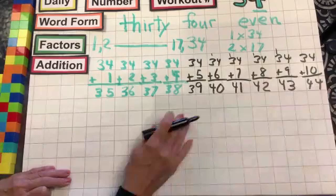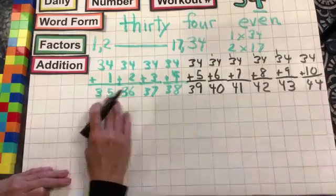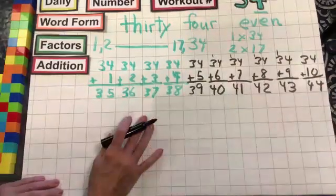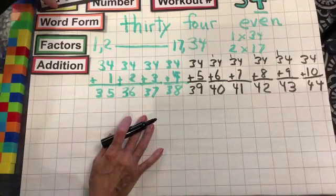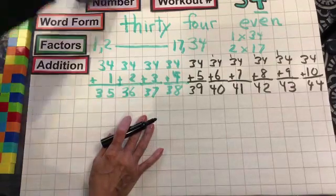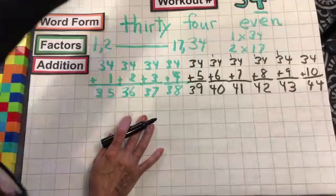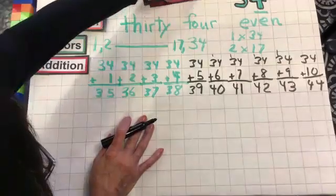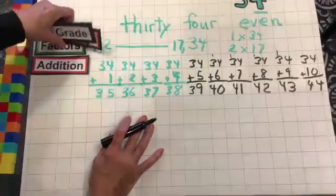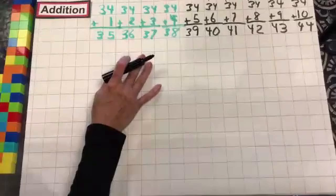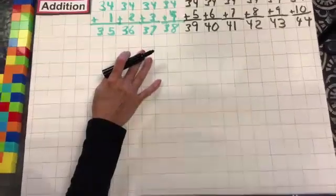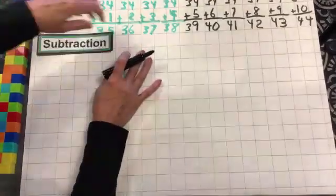We can check our answers to see if they are all in a row — count them in order. Let's move on to subtraction. I'm going to move my card up so you can see what I'm doing. Subtraction.